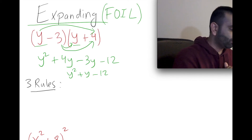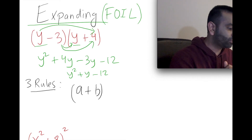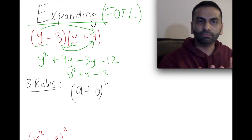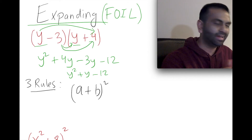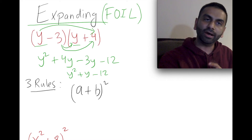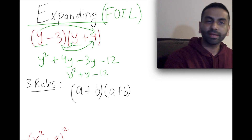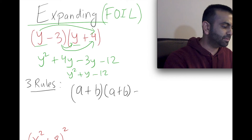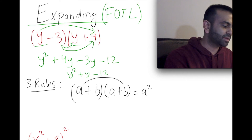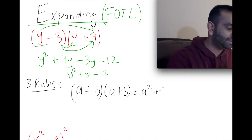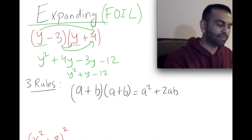Rule one: when you have (a + b) squared, what does that expand to? A lot of people initially think it's just a² + b², but that's wrong. (a + b)² means (a + b) times (a + b). When you FOIL that out, you get a², then ab, then another ab — so plus 2ab — and then b² at the end. So (a + b)² = a² + 2ab + b².